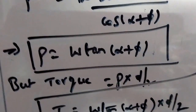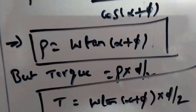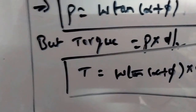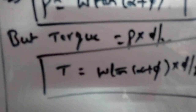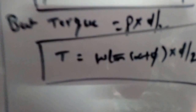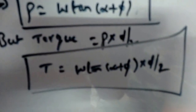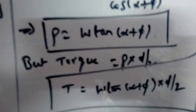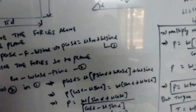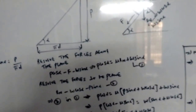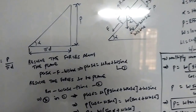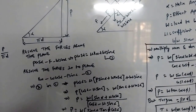We also know that the torque required at the handle equals P multiplied by the mean diameter divided by 2. Substituting P: Torque = W * tan(alpha + phi) * (d / 2). This is the complete procedure for deriving the effort required and the torque required at the handle of a screw jack.